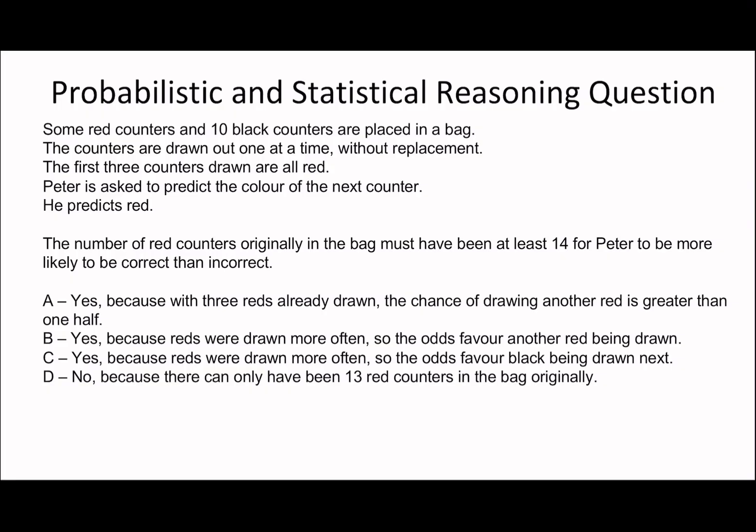On to the next question. The number of red counters originally in the bag must have been at least 14 for Peter to be more likely to be correct than incorrect. Some red counters and 10 black counters are placed in a bag. The counters are drawn out one at a time without replacement. The first three counters drawn are all red. Peter's asked to predict the color of the next counter. He predicts red.